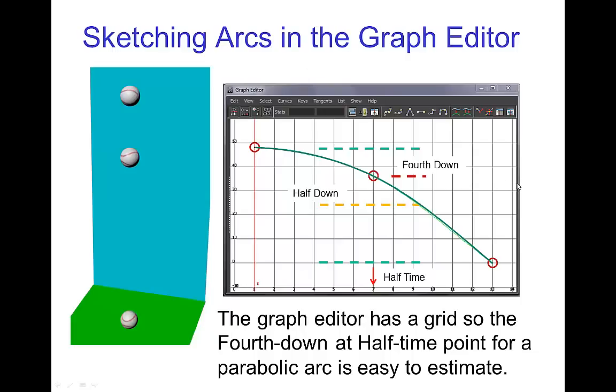Now this technique is even simpler when you want to sketch a parabolic arc in the graph editor. For example, for this ball that's falling down, this first keyframe is at the top. The last keyframe is at the bottom. The keyframe that's halfway in time between those two is here, and this is easy to find because the graph editor has a grid. And so this is pretty easy to either estimate or just count out.